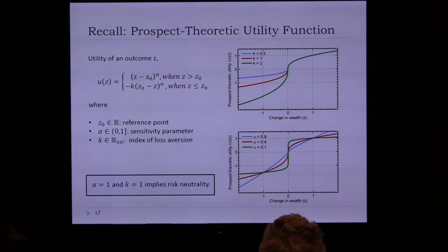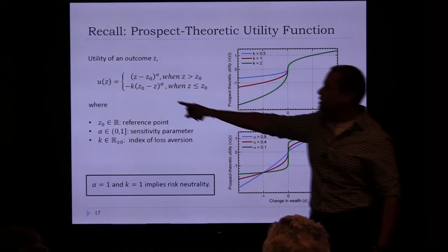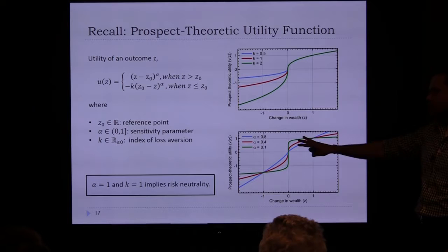To recap: the prospect theoretic utility function uses outcome z, perceived value u(z), shaped by alpha (the S-shape parameter) and K (which amplifies losses). We allow individuals to have their own alpha_i and K_i values, so players can be heterogeneous in their behavioral perceptions.